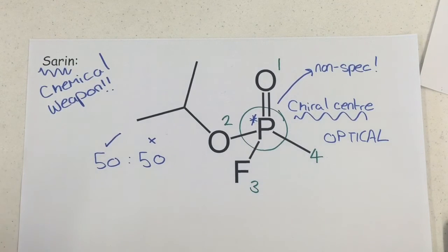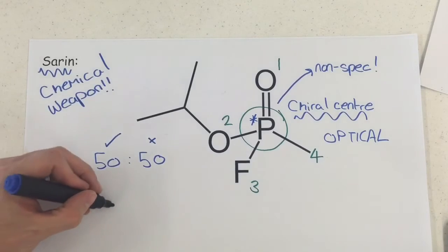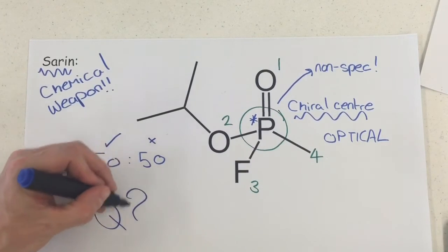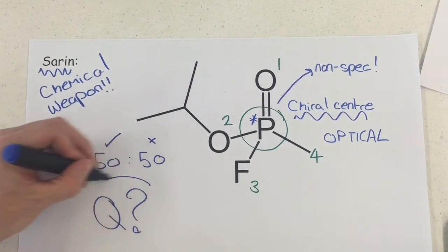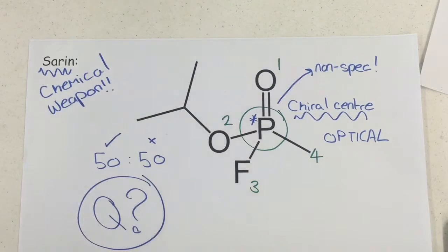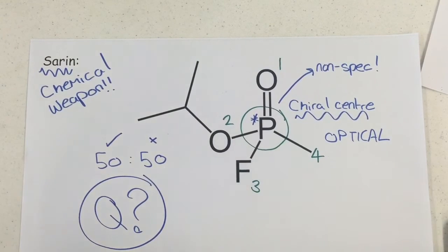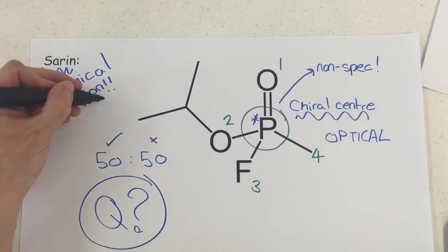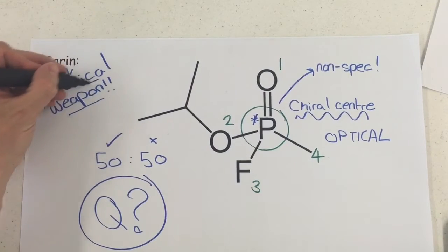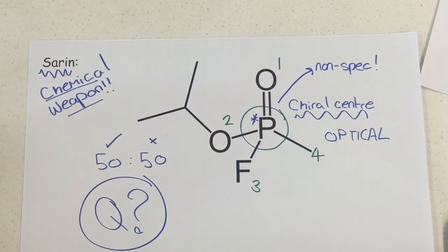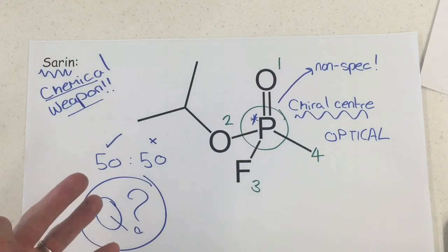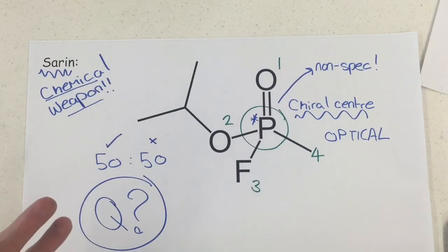But I suppose the question would be here: why are we not bothered for sarin if the optical isomer has a disastrous effect? And the rather morbid answer to that is because it's a chemical weapon. If it has a disastrous effect then surely that's an added bonus to someone who would be using this for some sort of horrible purpose.